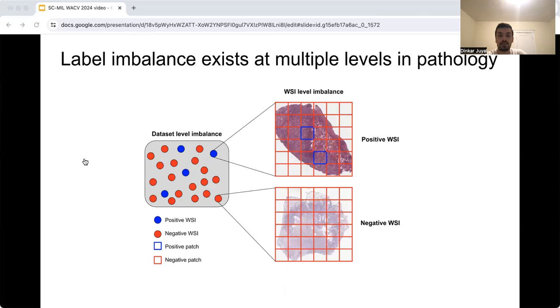Label imbalance in histopathology domain is present at two levels, dataset and whole slide image. In datasets, imbalance arises from different prevalence rates of diseases. For a given WSI with positive label, only a small subset of patches contribute to that positive label. This compounds the severity of imbalance, making imbalance classification in pathology challenging.